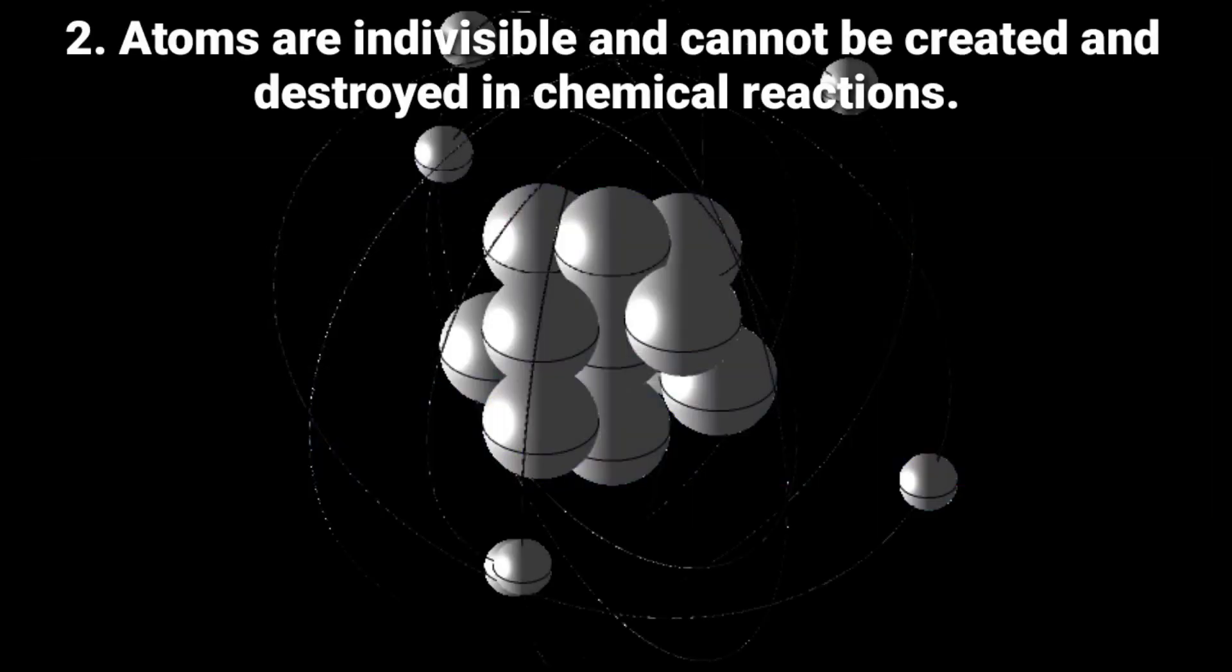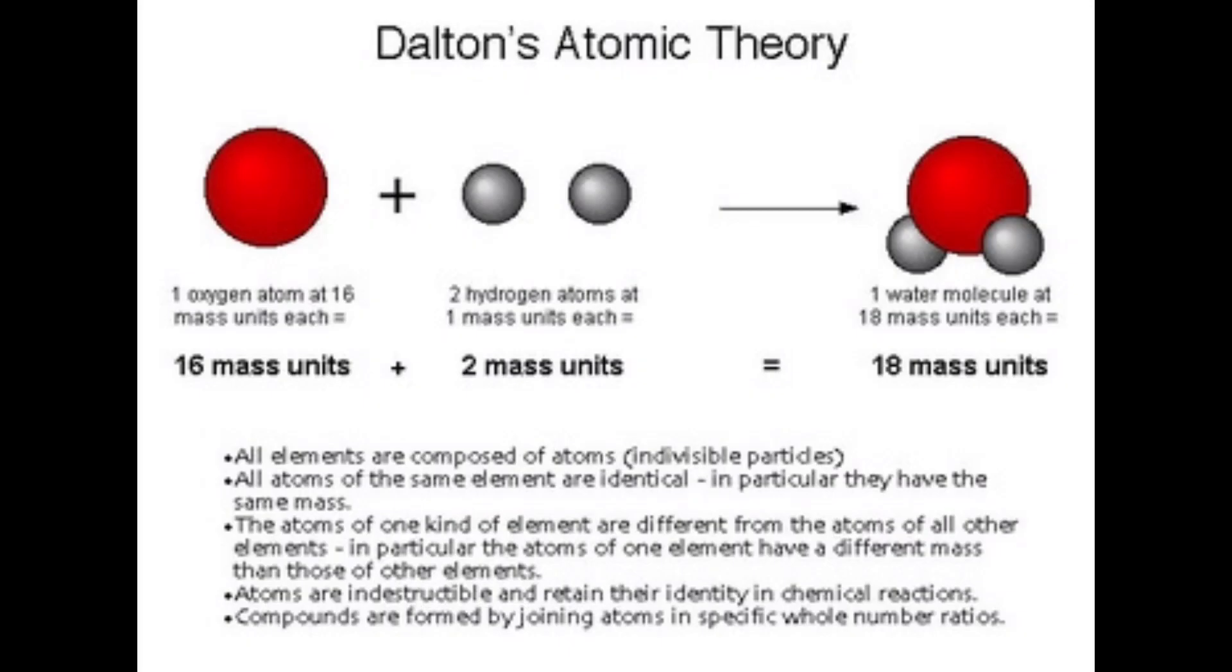Atoms are indivisible and cannot be created and destroyed in chemical reaction. What does it mean? This means atom is the fundamental unit of matter. It is not possible to divide the atom. In a chemical reaction, a new compound is formed by mixing two elements. No new atoms are made or destroyed there.